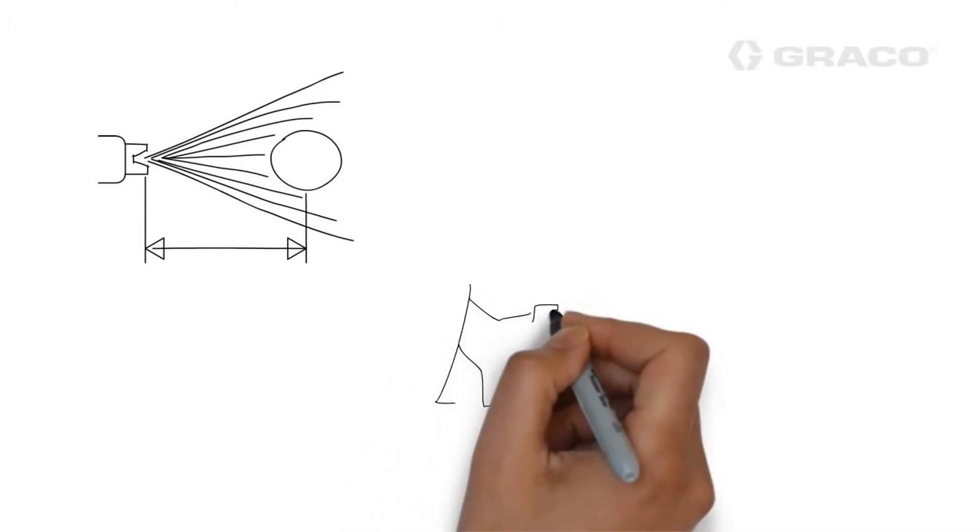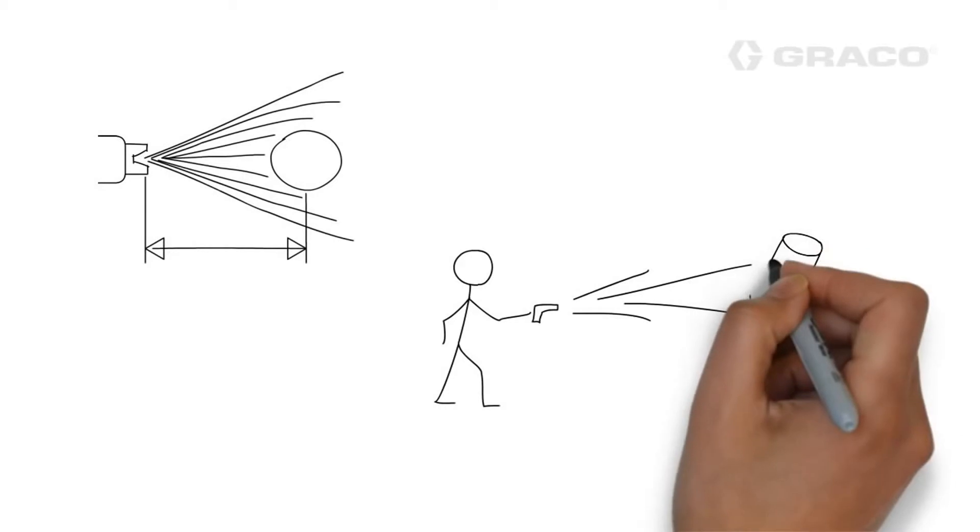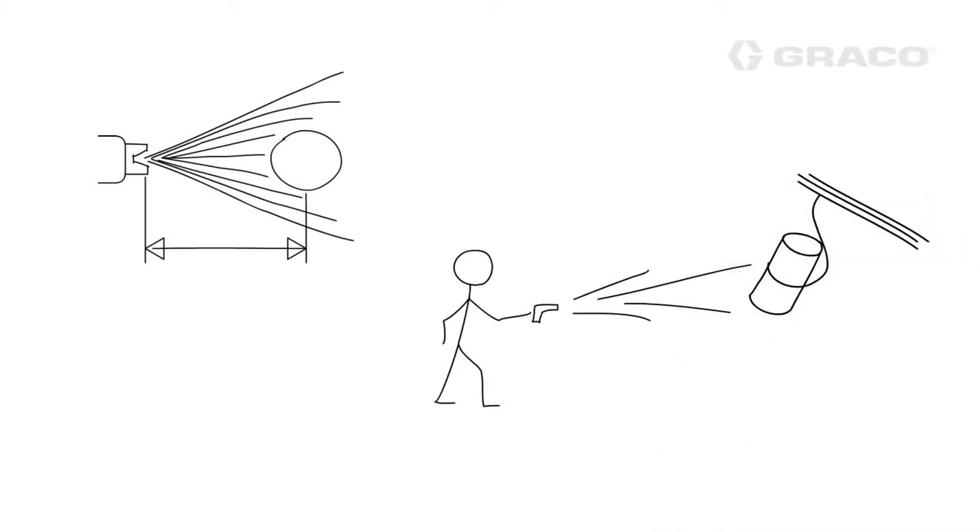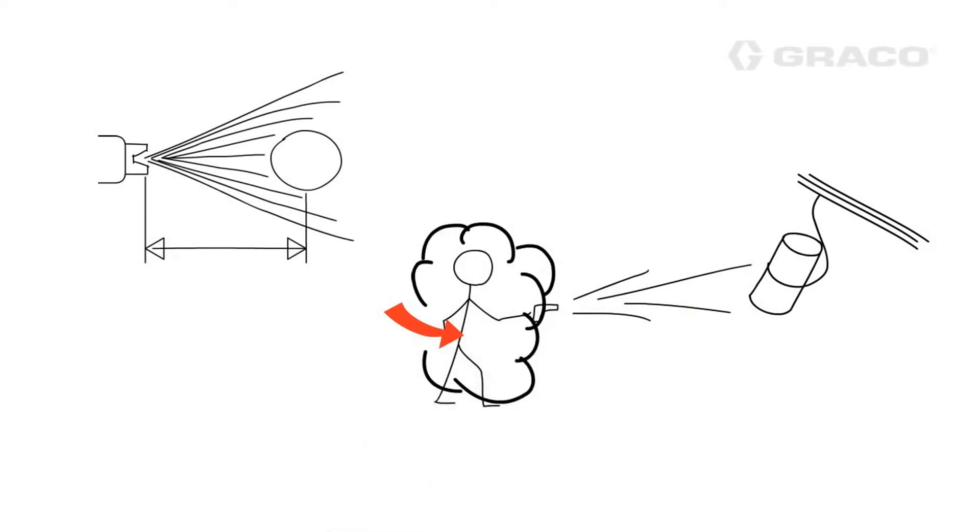Second, if the gun you're painting with is too far away from the part that's being painted, then the charged particles will seek out other closer grounds. Generally, that's the person holding the gun. This tends to get more paint on the operator rather than the part being painted.